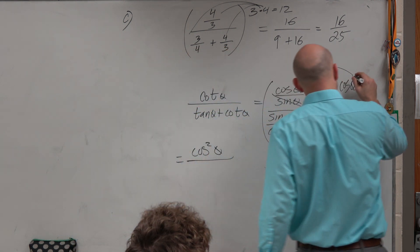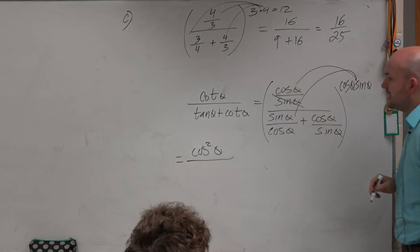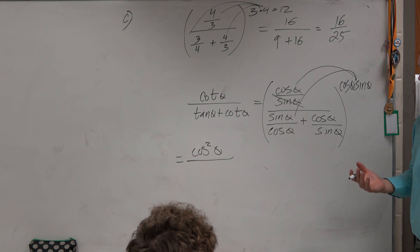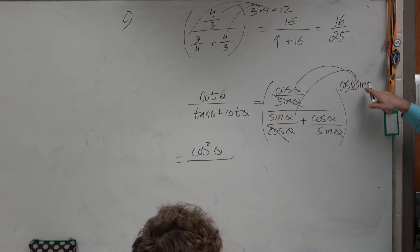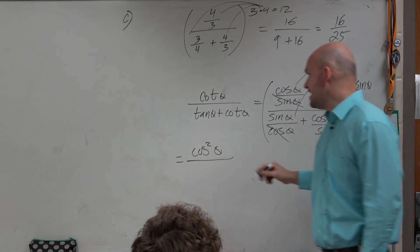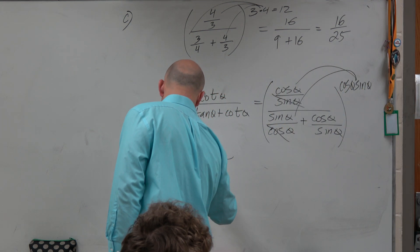When I do cosine times sine times sine of theta over cosine of theta, my cosines would divide out, leaving me with a sine times sine, which is sine squared of theta.